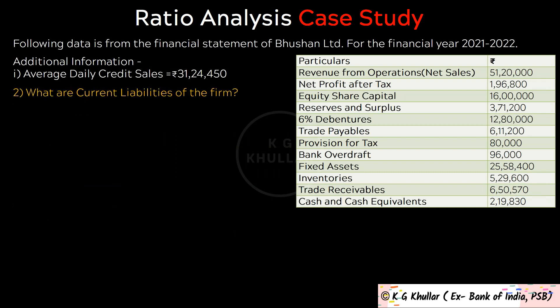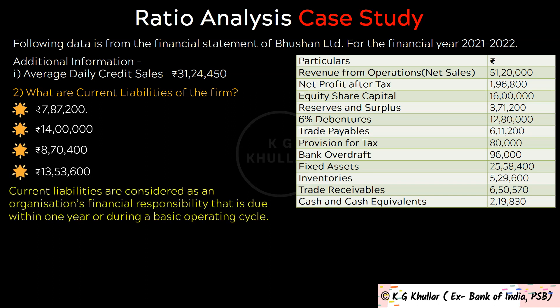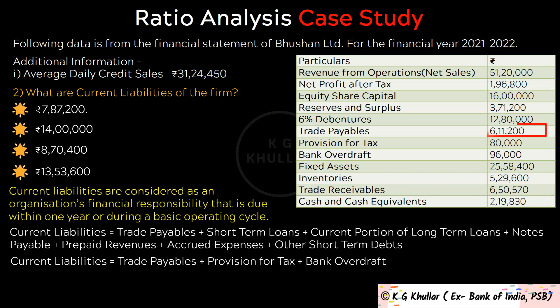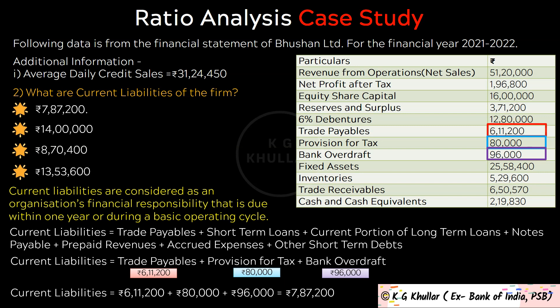The next question is: What are current liabilities of the firm? Current liabilities are an organization's financial responsibilities due within one year or during a basic operating cycle. For this firm, current liabilities are trade payables plus provision for tax plus bank overdraft, that is Rs. 6,11,200 plus Rs. 80,000 plus Rs. 96,000, which equals Rs. 7,87,200. Thus the correct option is option A.